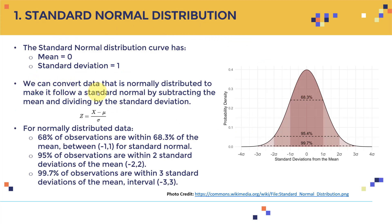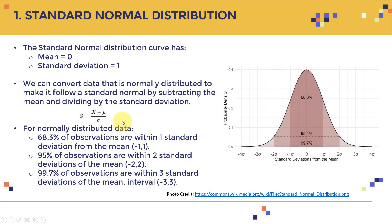You convert normally distributed data to a standard normal distribution by subtracting the mean and dividing by the standard deviation. So you take your data point X, subtract the mean, divide by the standard deviation, and you get what we call the Z distribution, or standard normal distribution, which has a mean of zero and a standard deviation sigma equal to one.